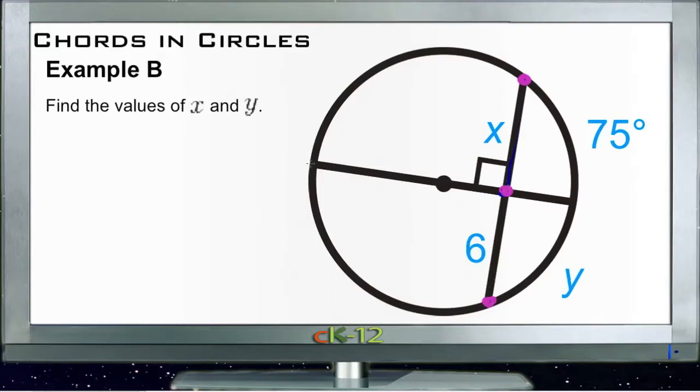And since this line right here is a diameter, we know that the diameter, meeting at 90 degrees, so it's perpendicular, bisects this chord. So that tells us that X and 6 are equal halves of the same chord. So X and 6 must be the same thing. So that tells us that X equals 6.